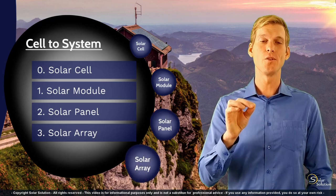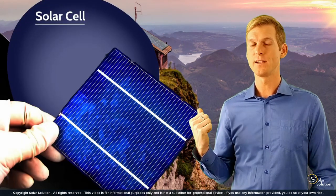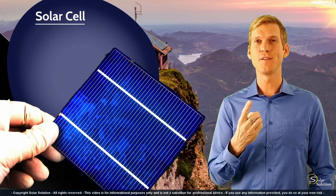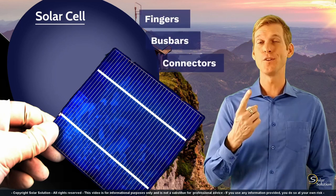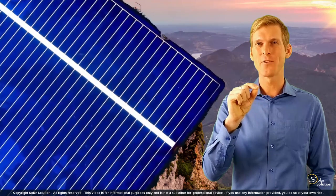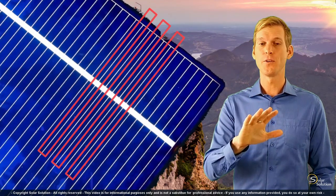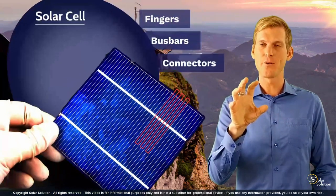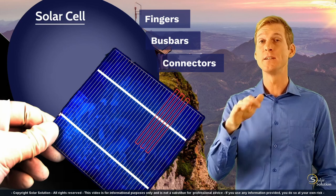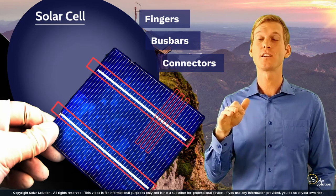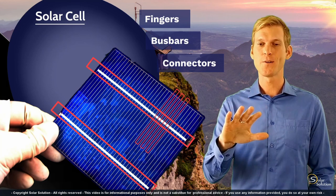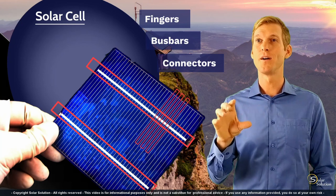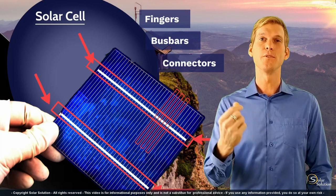Let's look first at the solar cell. Here you can see a polycrystalline solar cell, and I want to point out three different components. The fingers are the very tiny, narrow strips of conductive material attached to both sides of the cell — they collect power from the cell and redirect it through the bus bars, which are the larger conductive strips on the surface of the cell. At the end of the bus bars are the connectors, where they are welded to adjacent solar cells.